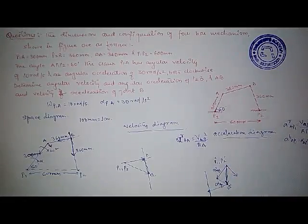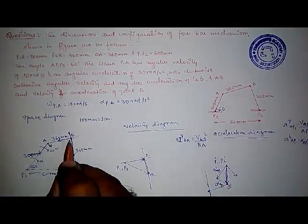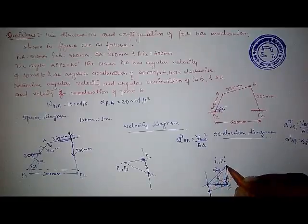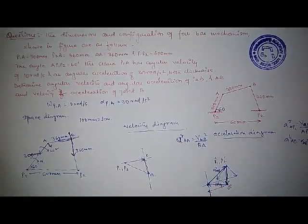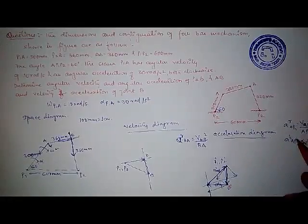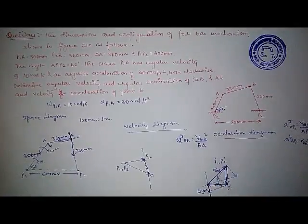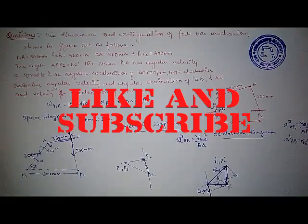Next, for link BP2: the radial component is in this direction, and its magnitude is known — velocity of BP2 squared divided by the length of link BP2. The tangential component from here is perpendicular to this. Combining all these components for AP1, AB, and BP2, this gives us the complete acceleration diagram. For every link we got the radial and tangential components, and from this diagram we can determine the magnitude of the tangential component of link BA. Thank you for watching this video — I hope this will be beneficial to you.